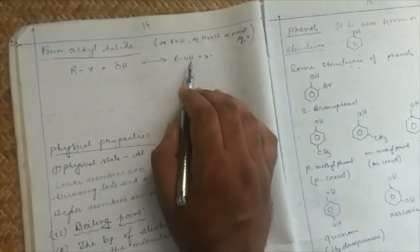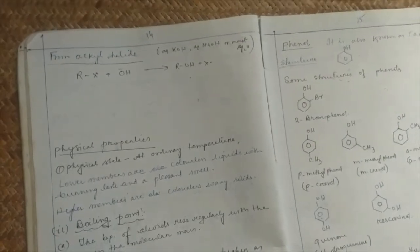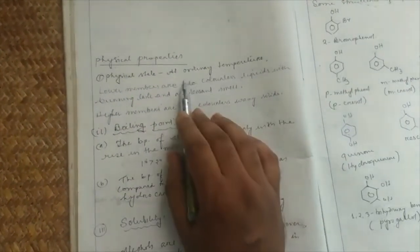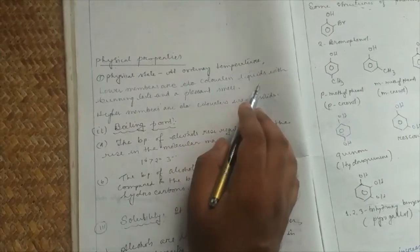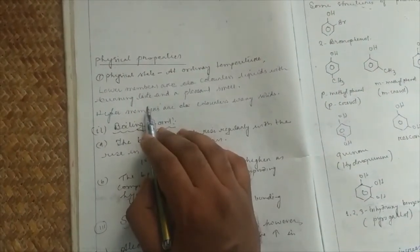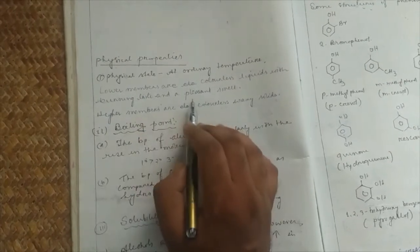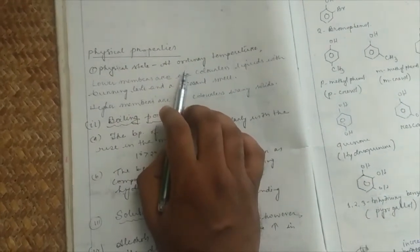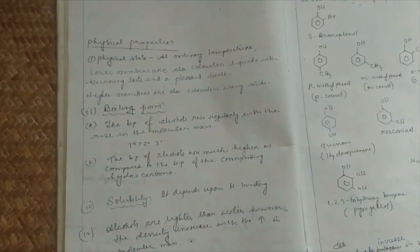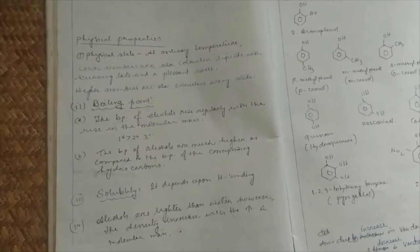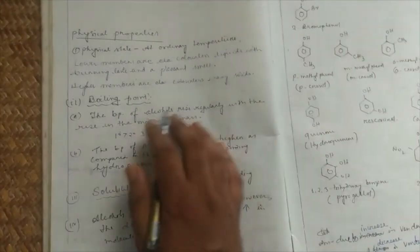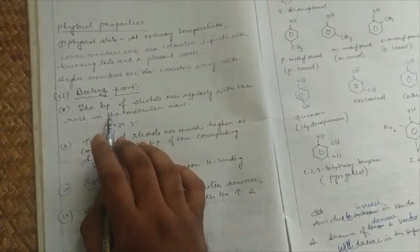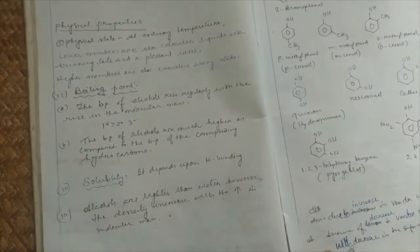From alkyl halide to alcohol, that topic has already been discussed in unit 10 of haloalkane and haloaryl. So this is the physical properties, you can use word by word. Ordinary temperature, lower members are liquid and the burning taste is in the mouth and the smell is present. Higher members are solid and the boiling point is important.